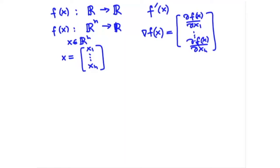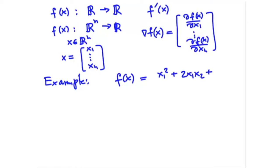Let's consider some examples with an arbitrary function. f of x is given by x₁² + 2x₁x₂ + 3x₂² − x₁ − x₂. This is a multivariable polynomial — specifically a two-variable polynomial where the highest degree of any term is 2, so this is a quadratic polynomial of two variables.